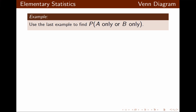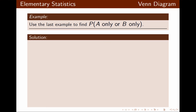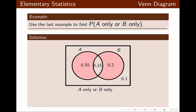Using the last example, we want to find the probability of A only or B only. In the Venn diagram I shade A only and B only. Because this is an or problem, whatever is shaded gets added together. So probability of A only or B only equals 0.55 plus 0.20, which gives 0.75.